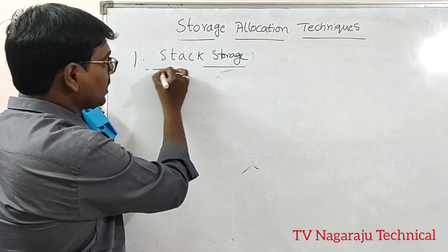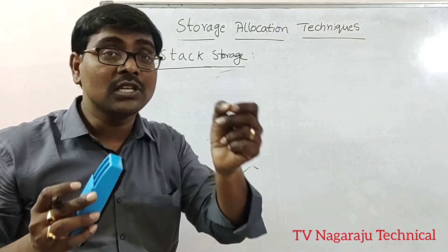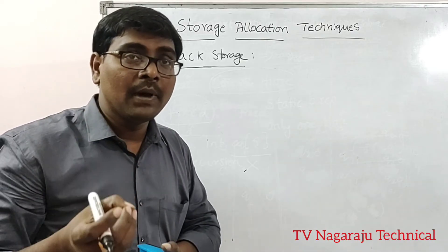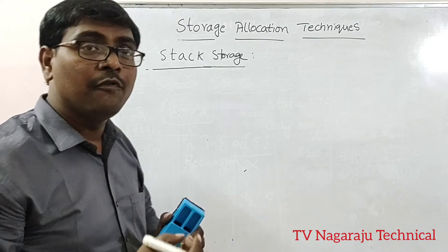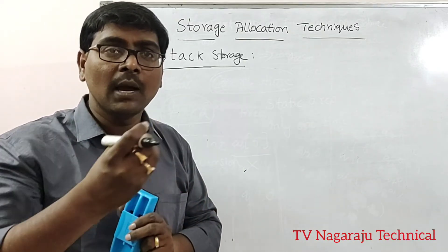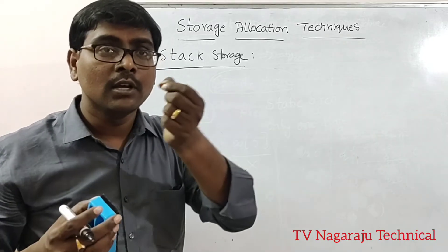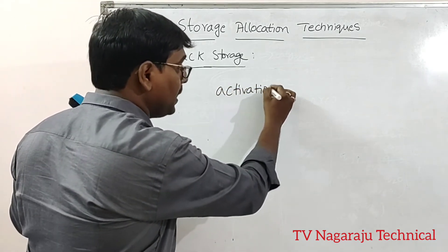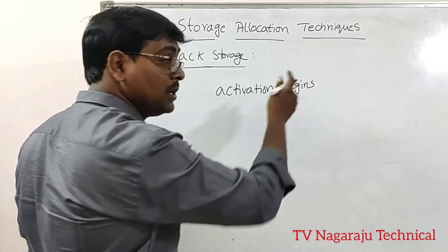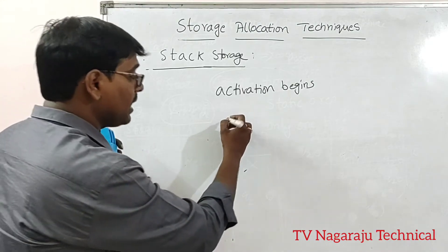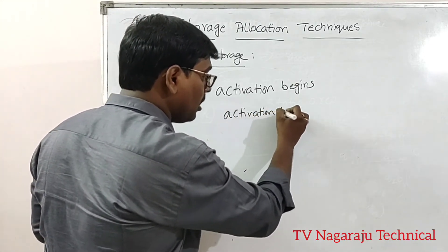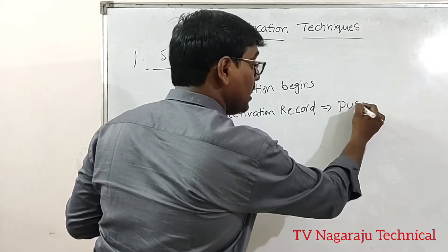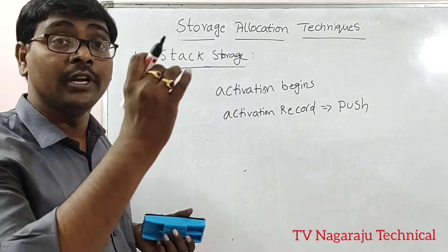The next type is stack storage allocation. You know the concept — last in, first out. Stack storage allocation means memory is organized as a stack. Whenever we call a procedure, the program under execution is called an activation. Whenever an activation begins — meaning the start of program execution — the activation record is pushed into the stack.